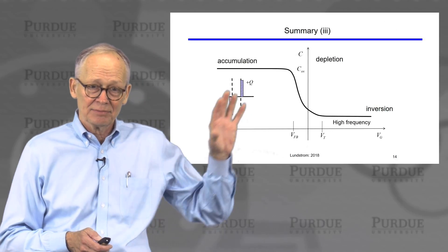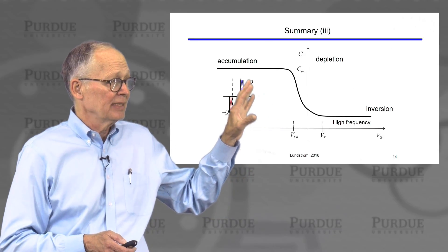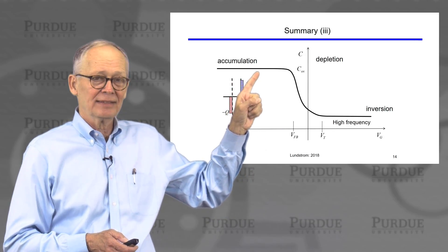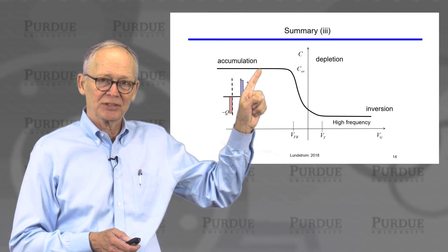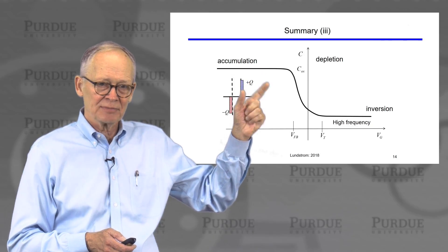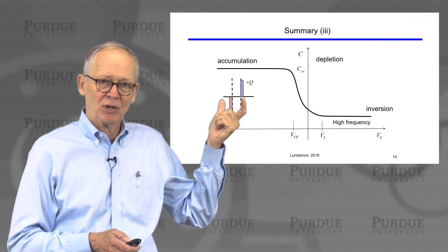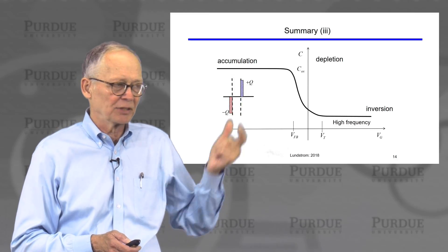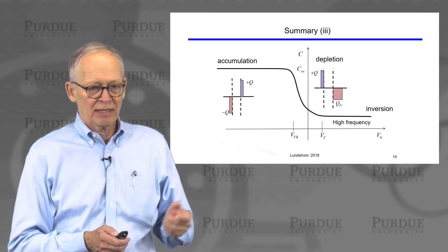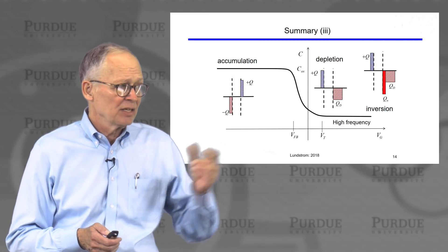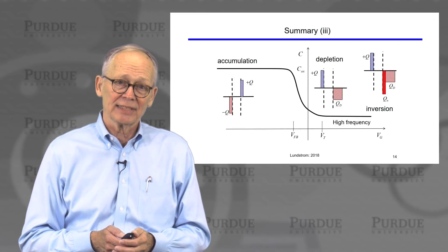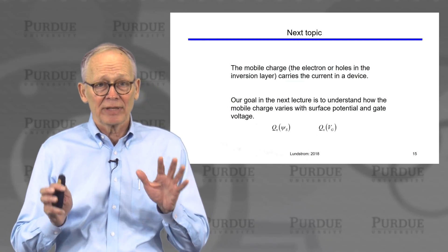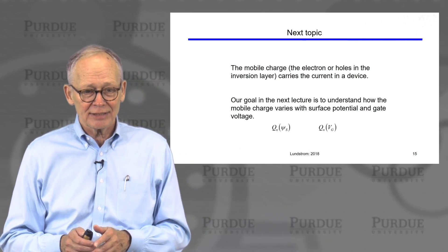The way to understand these systems is to think about what happens when I am biasing the MOS capacitor in a given regime and apply a small signal AC — where do the fluctuating charges appear? Thinking about it that way, you can understand why the MOS-CV characteristic has this particular shape.